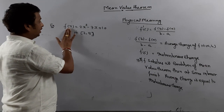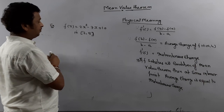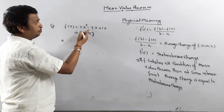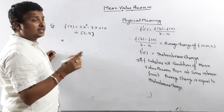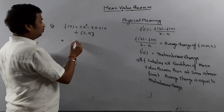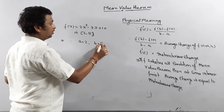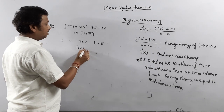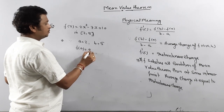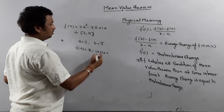The example is: f(x) = 2x² - 7x + 10 on the interval [2, 5]. Since it is a polynomial, it is continuous and differentiable on every interval, so MVT applies here. Here a = 2 and b = 5. We calculate f(a) = f(2): 2(4) - 14 + 10 = 8 - 14 + 10 = 4.